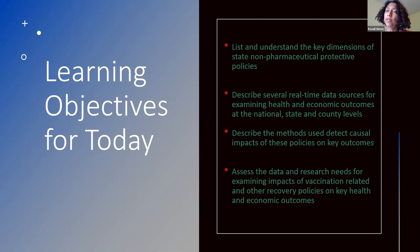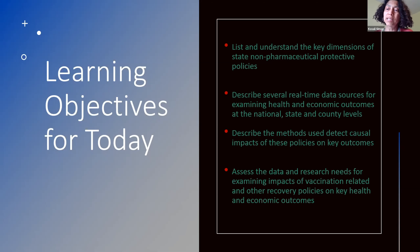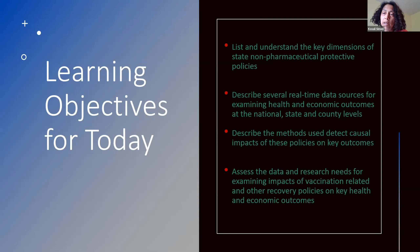We're going to talk about the methods, especially trying to say when we're evaluating state policy impacts, we want to get at causal effects. And so there are going to be methods challenges here. We're also going to assess these real-time data sources and, going forward, what kind of data resources we should be looking for as we think about longer-run impacts of what happened during the last year, as well as the ongoing policies affecting our recovery out of the pandemic.